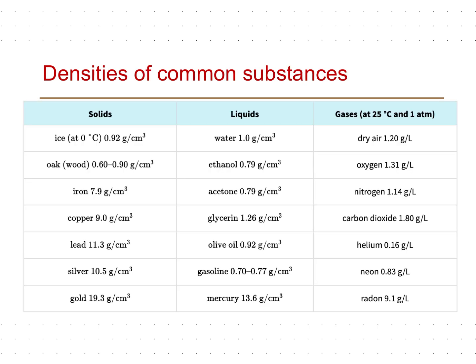This table shows the densities of some common substances. For example, the density of ice at 0 degrees Celsius is 0.92 grams per centimeter cubed, and water is 1.0 grams per centimeter cubed. As you can see, the density of metals is on the higher side — iron, copper, lead, silver, and gold all have higher density values.